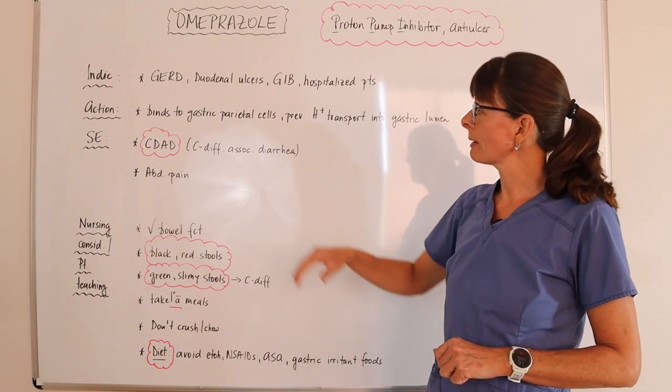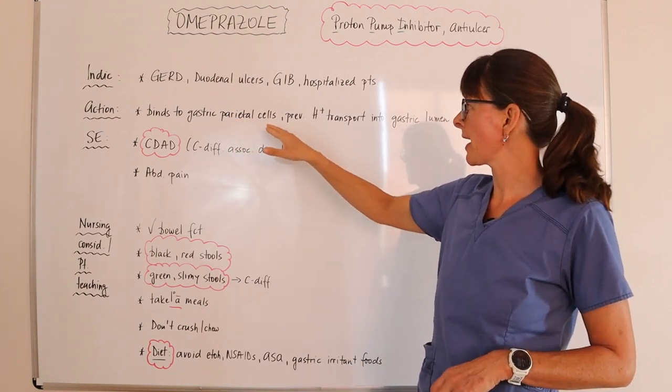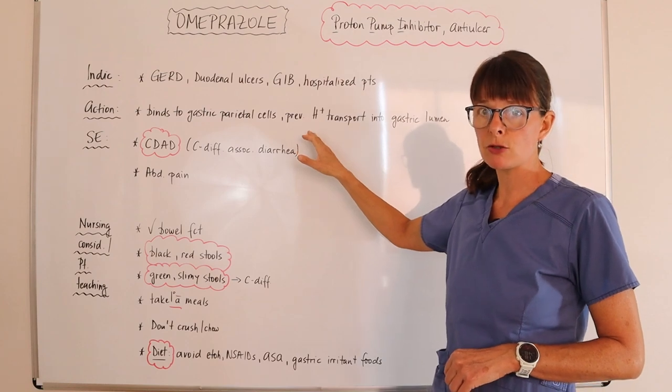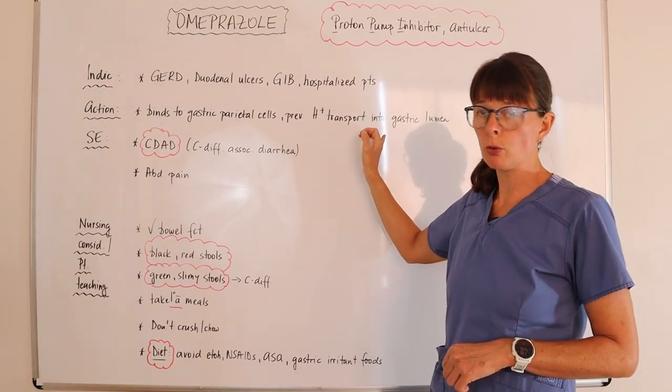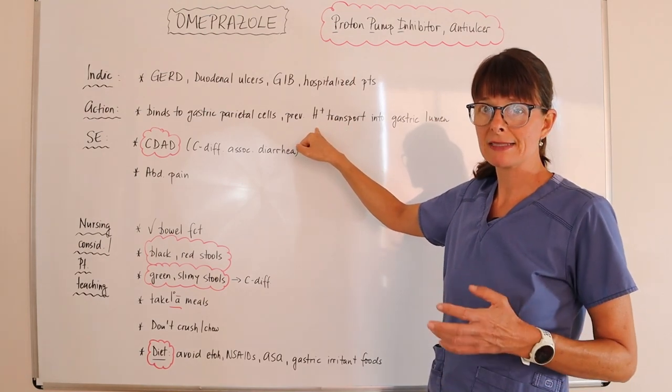The way that omeprazole works is it binds to the gastric parietal cells and prevents the transport of hydrogen ion into the gastric lumen. Keep in mind that hydrogen ion is an acid.